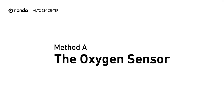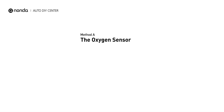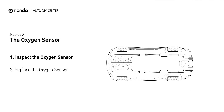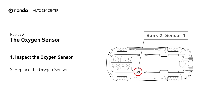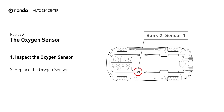Method A: The Oxygen Sensor. This oxygen sensor is located right before the catalytic converter. Bank 2 is on the side with cylinder number 2. Sensor number 1 is usually the one in the exhaust manifold.